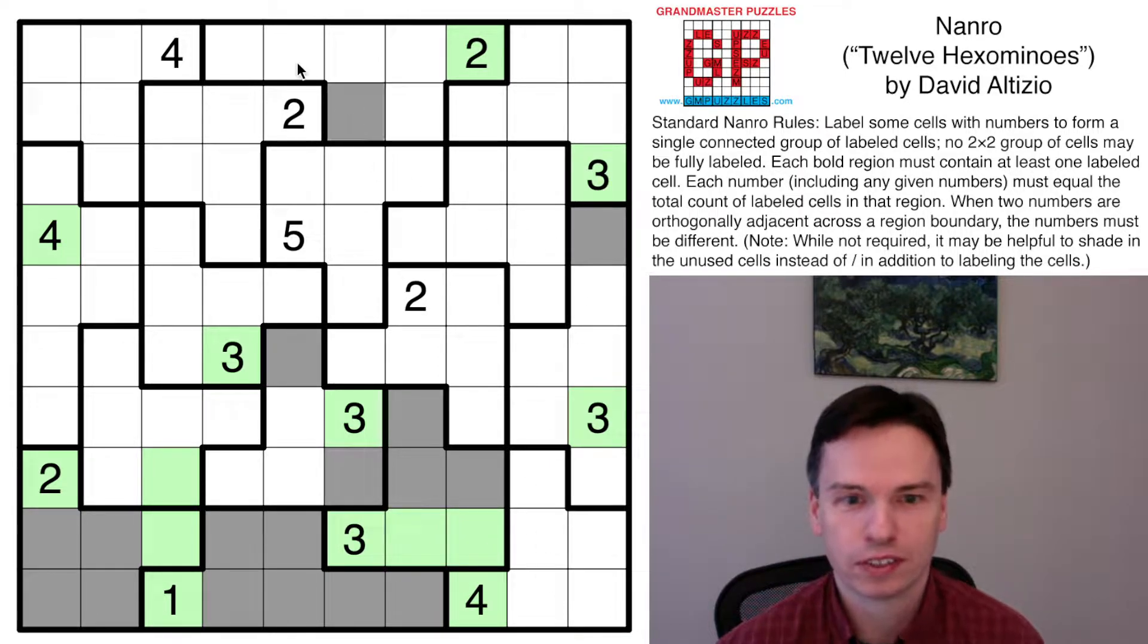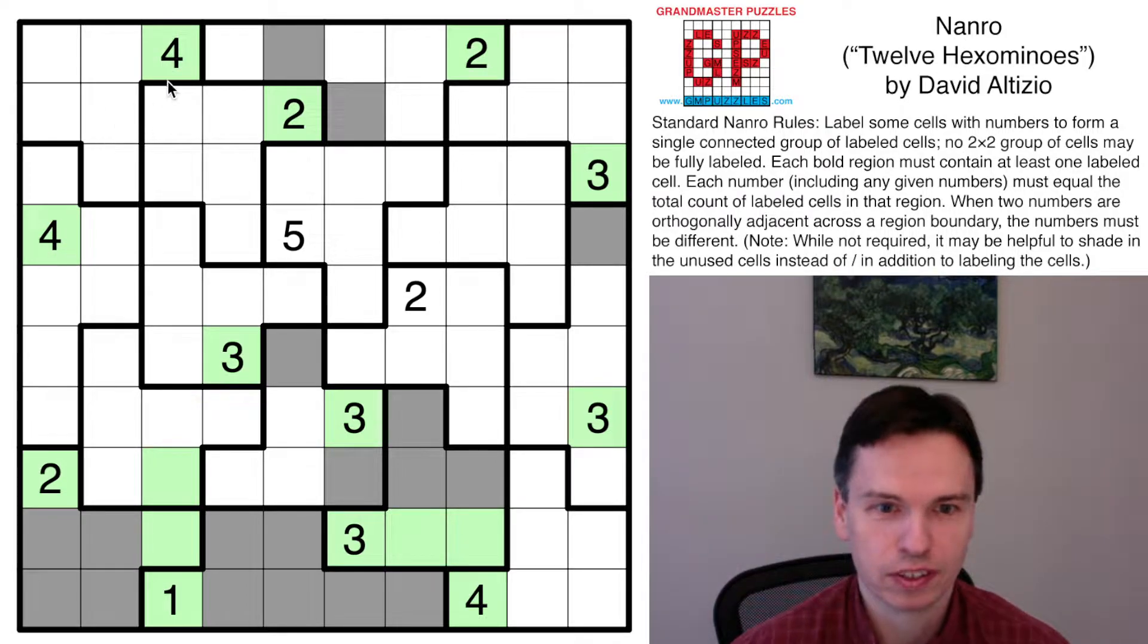These threes don't want to touch. These twos don't want to touch. Are there other touching numbers at this moment? This four and this four don't want to touch. So what does that actually mean? This four and this four looks like the next place to look, and that's because it also has a tension of this two.